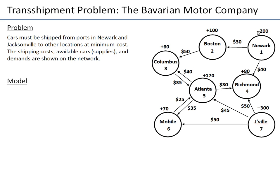These are the supply nodes. All nodes are numbered 1 through 7. Newark is node 1 and Jacksonville is node 7. B1 is minus 200, and it is negative because we want to indicate this is a supply. Remember: positive means demand, negative means supply. So we have 200 cars of supply at node 1, and 300 cars of supply at node 7.